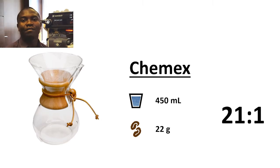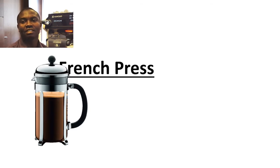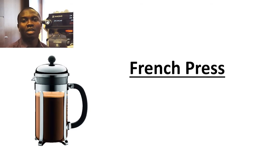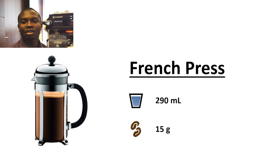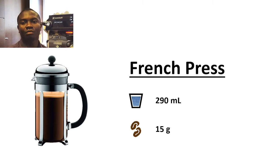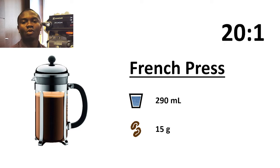The second famous infusion method, which uses a larger quantity of water, is the French press. For instance, for 290 milliliters of water you will use around 15 grams of medium ground coffee, which gives a ratio of water to coffee of 20 to 1.